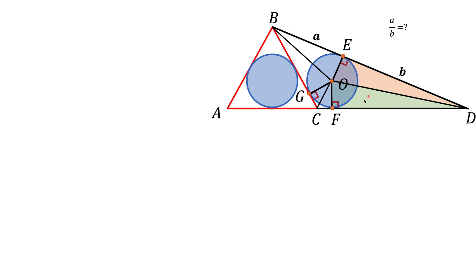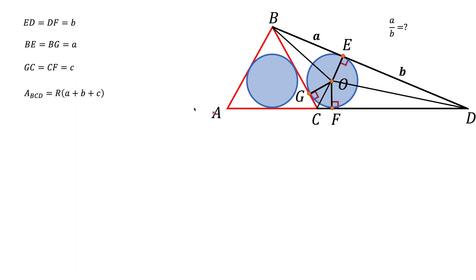In this particular case, we are interested in the fact that DF also equals B, just like ED. In a similar way, BG equals BA, which is A; and GC equals CF, and we'll call that length C. The next thing we want to use is the relationship between the sides of the triangle, the radius of the inscribed circle, and the area of the triangle. The area of the triangle equals the radius of the inscribed circle times (A + B + C), where A + B + C is half the perimeter, because there are two A's, two B's, and two C's in this triangle.